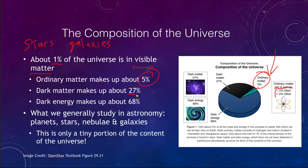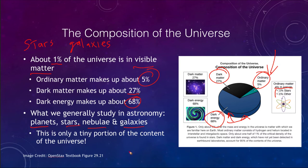Dark matter makes up about 27% of the universe, and dark energy is 68% — the vast majority. So everything we've studied so far — planets, stars, nebulae, and galaxies — represents only about 1% of the universe, the visible matter.